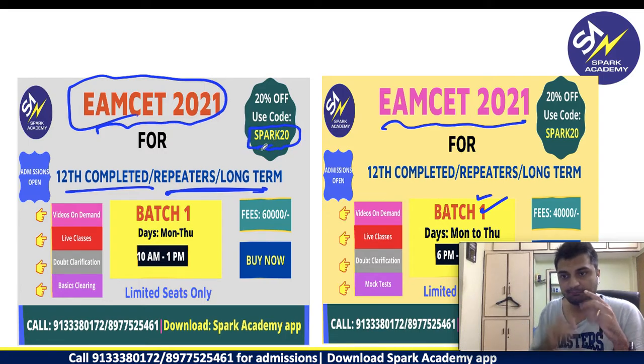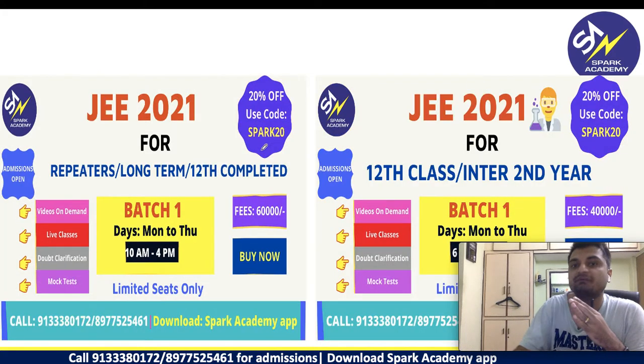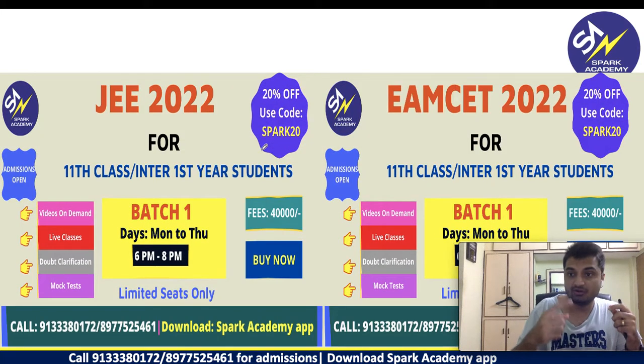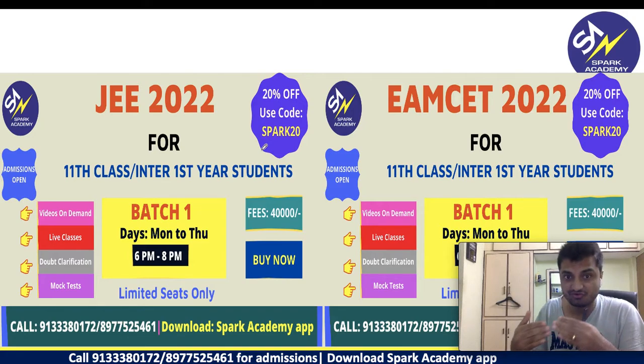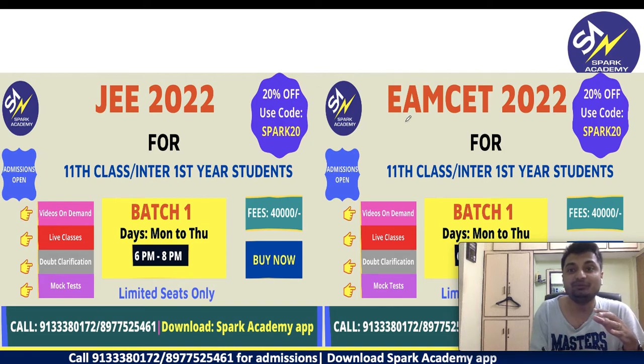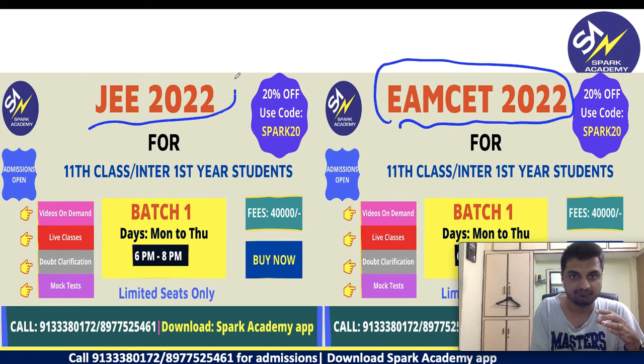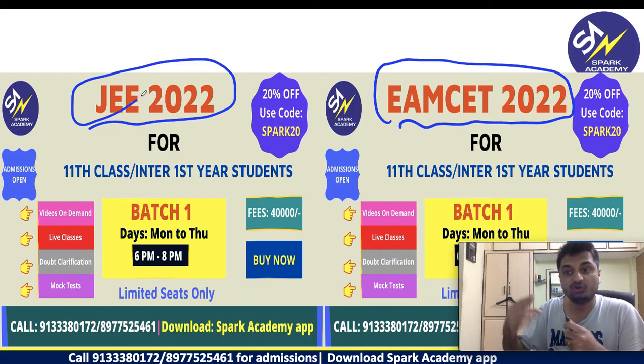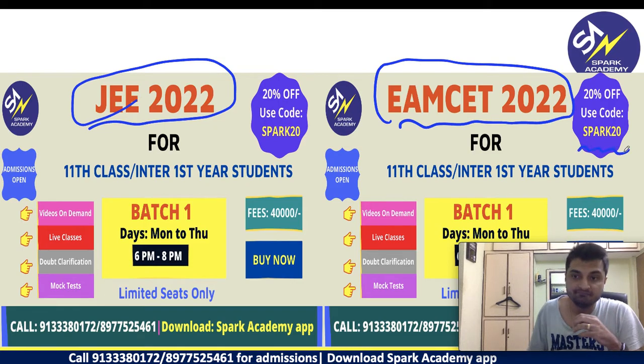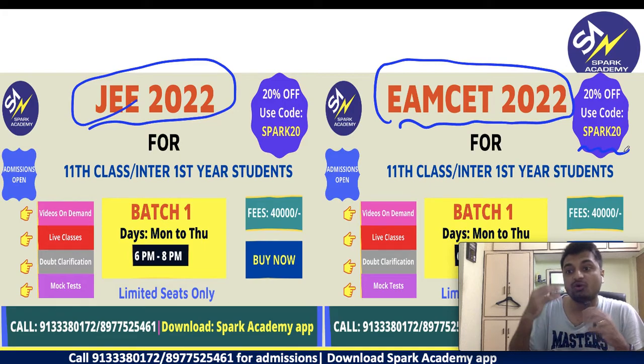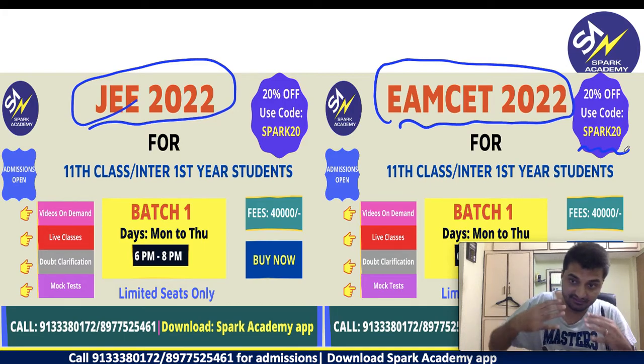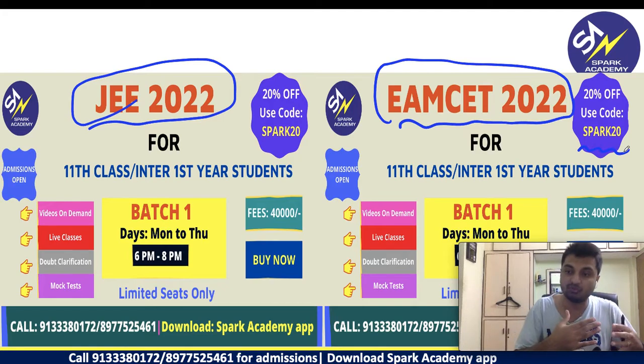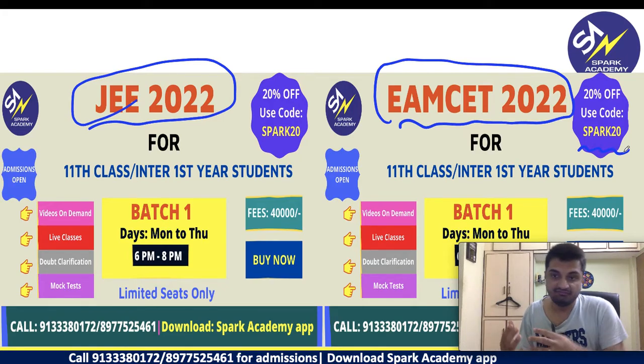We are also open for admissions. 2021 evening batch admissions are already open right now. Only the morning batch, we are starting next week as well. This is for a repeater exclusively 12th completed and repeater program. You have a 20% discount. You can use Spark 20. The links are given below. This is for people who are writing it for the next year. Same is for JEE as well. We are opening admissions now. We are taking admissions for 2022 JEE and MZET.